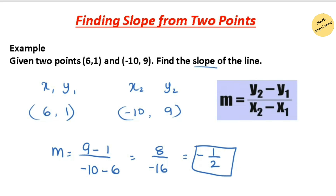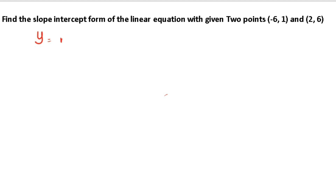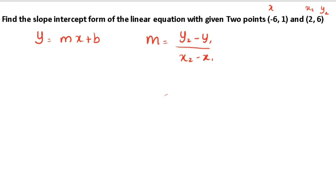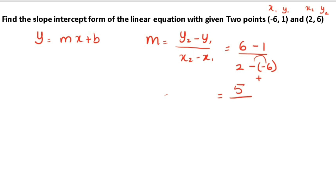Now let's find the slope-intercept form when two points are given. The slope-intercept form is y equals mx plus b. Using the slope formula y2 minus y1 over x2 minus x1, with the given points: y2 is 6, y1 is 1, x2 is 2, x1 is negative 6. So (6 minus 1) over (2 minus (negative 6)) equals 5 over 8. The slope is 5 over 8.